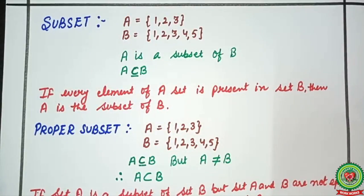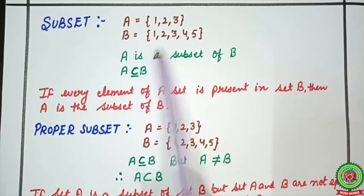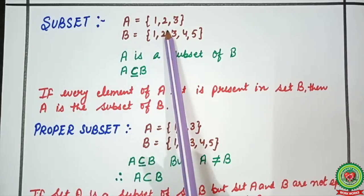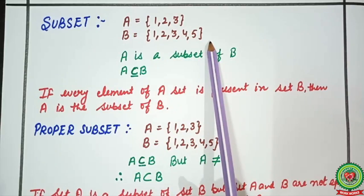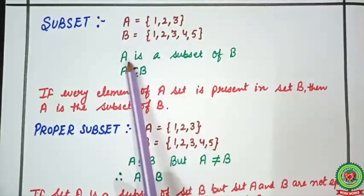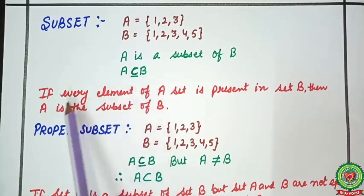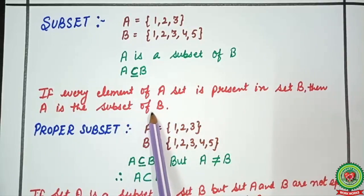Before starting today's topic, we will quickly recall about what subsets and proper subsets are. Here I have taken one example of subset. You can see two sets, A and B: A equals {1, 2, 3} and B equals {1, 2, 3, 4, 5}. You can see that elements of A are present in set B. So A is the subset of B — this is the sign for subset. If every element of set A is present in set B, then A is the subset of B.